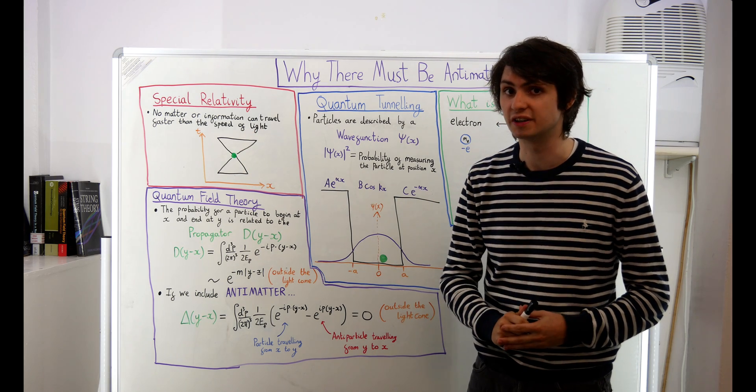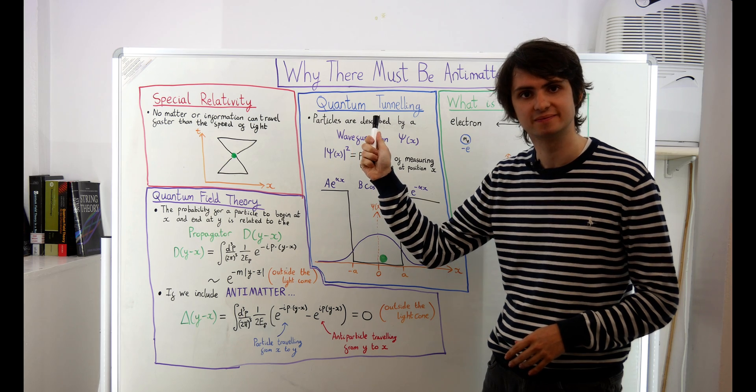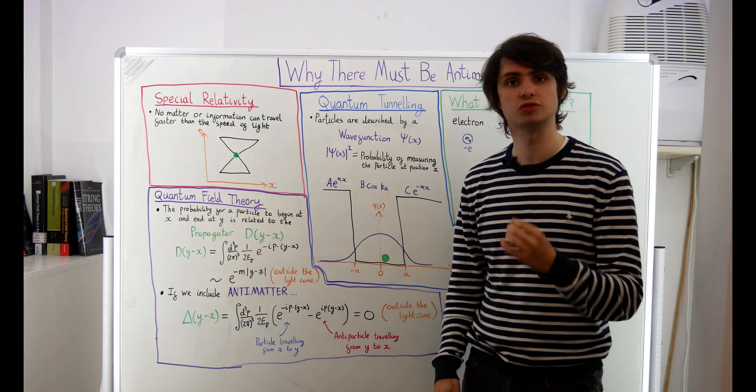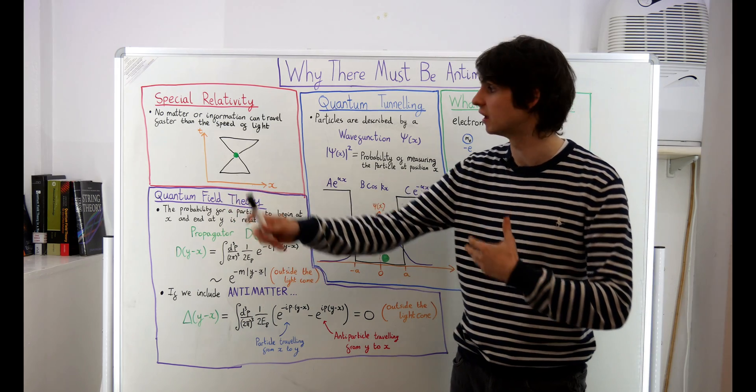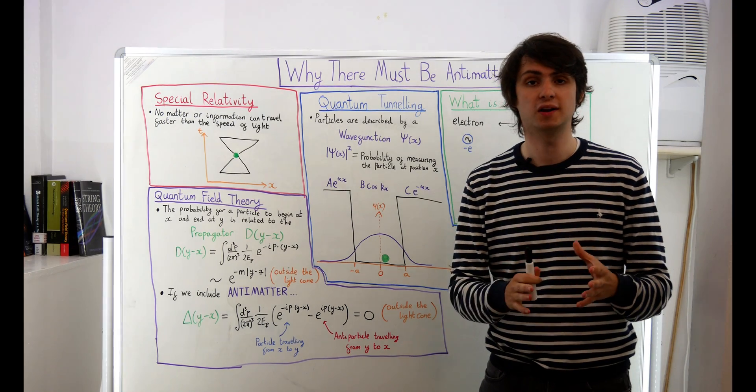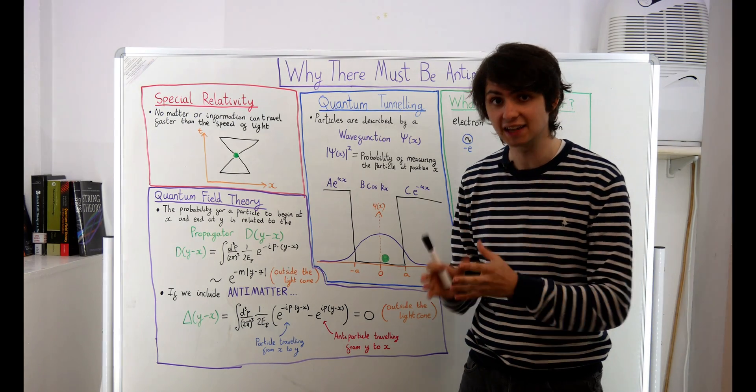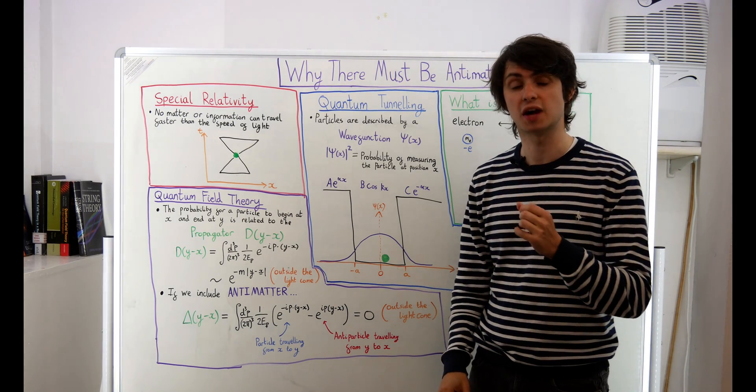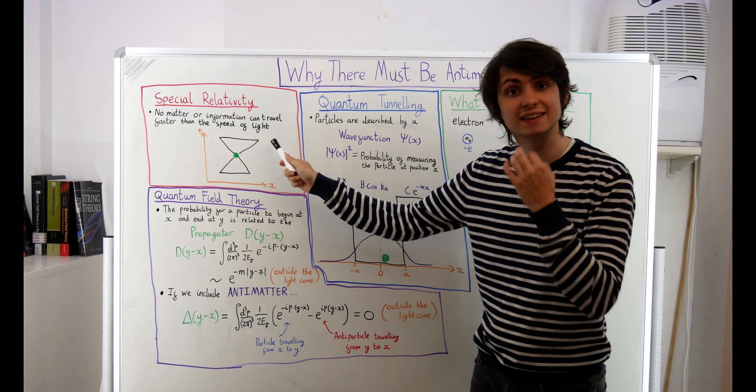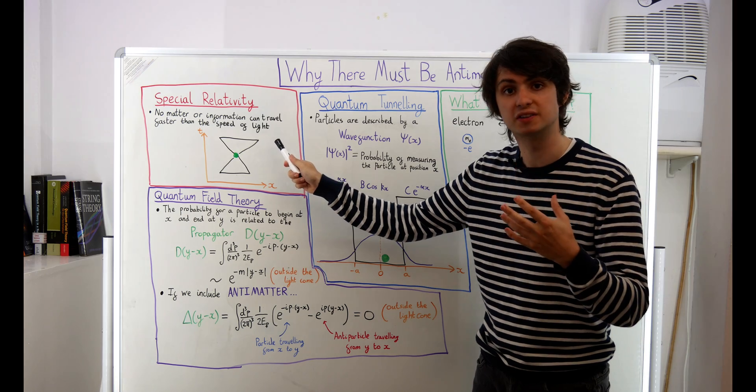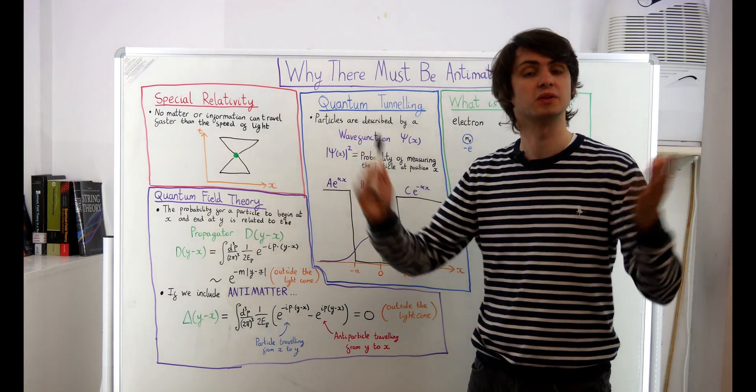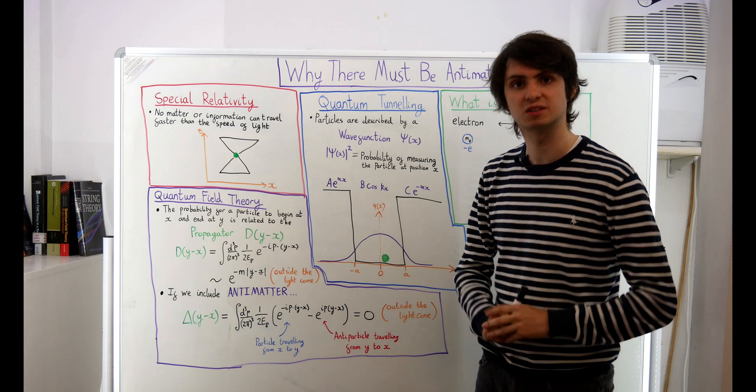The solution to all of this turns out to be antiparticles. When we only have normal particles in our theory, there's a non-zero chance that they can travel faster than the speed of light and escape their light cone. But, if each normal particle has a corresponding antiparticle, then it turns out that the probability of finding the particle outside of its light cone cancels with the probability of finding its antiparticle outside the light cone. So neither of them can be found outside the light cone. Let me explain.